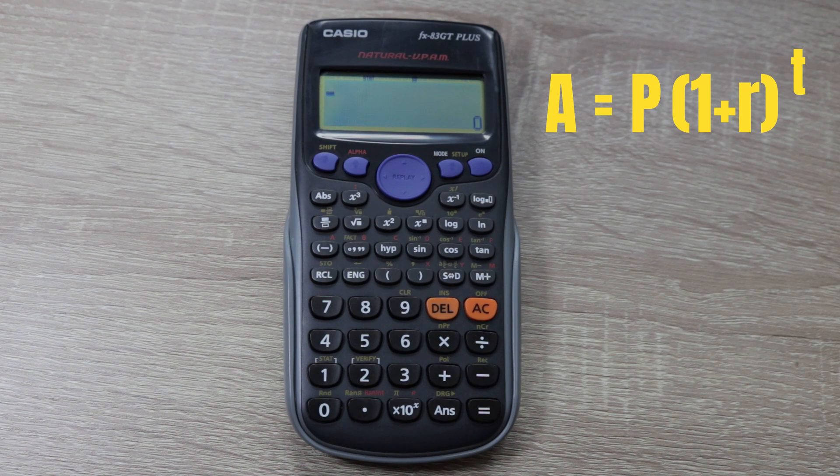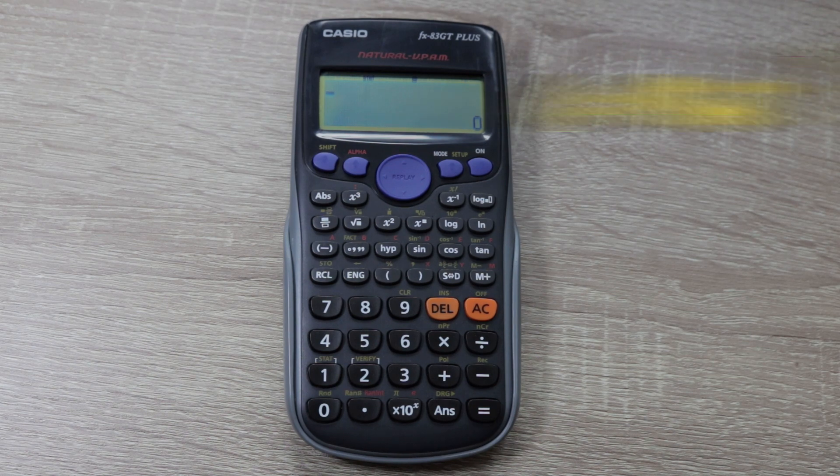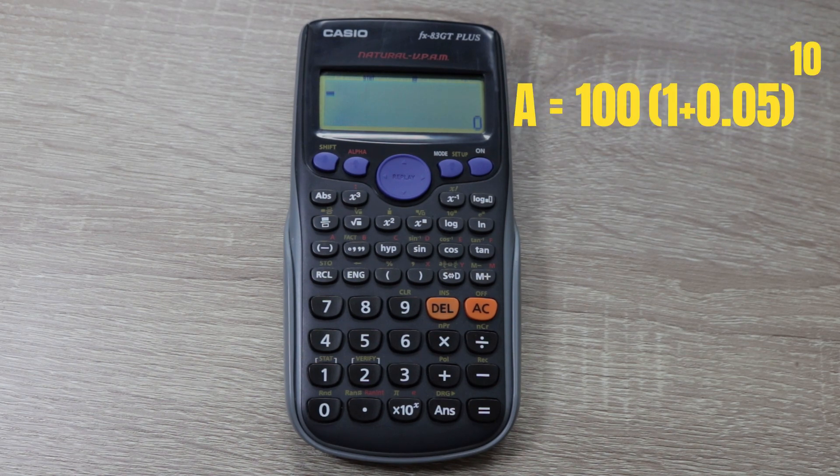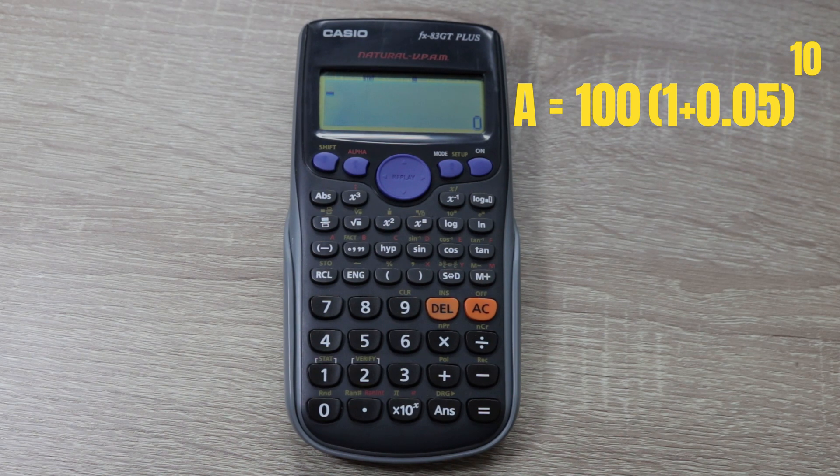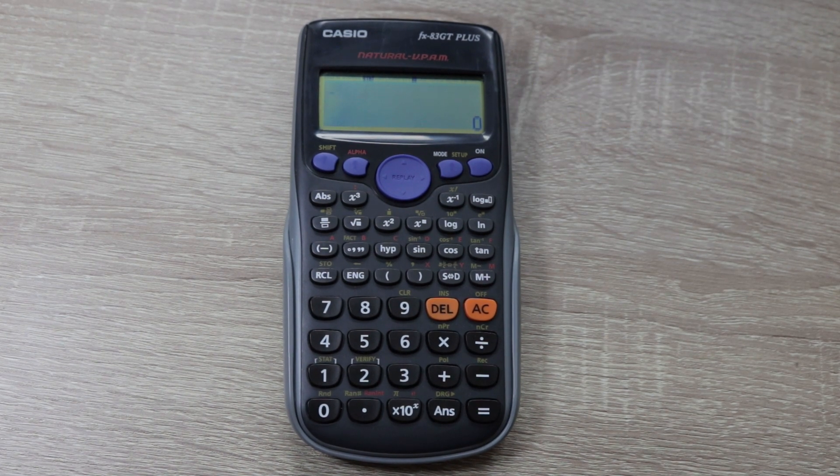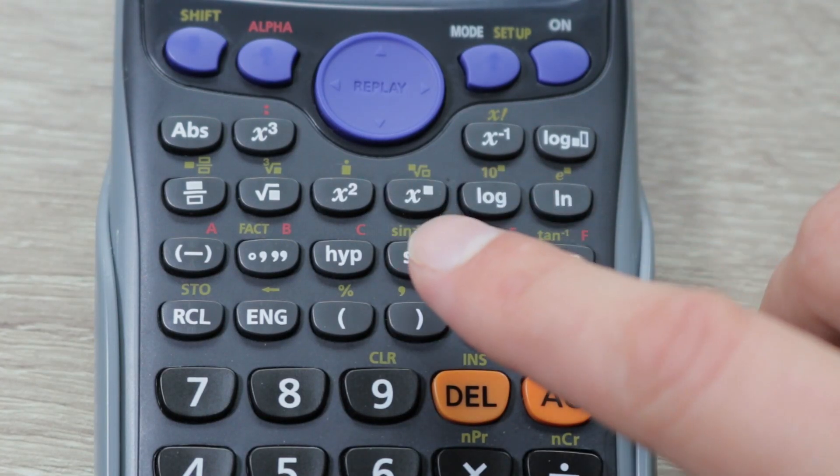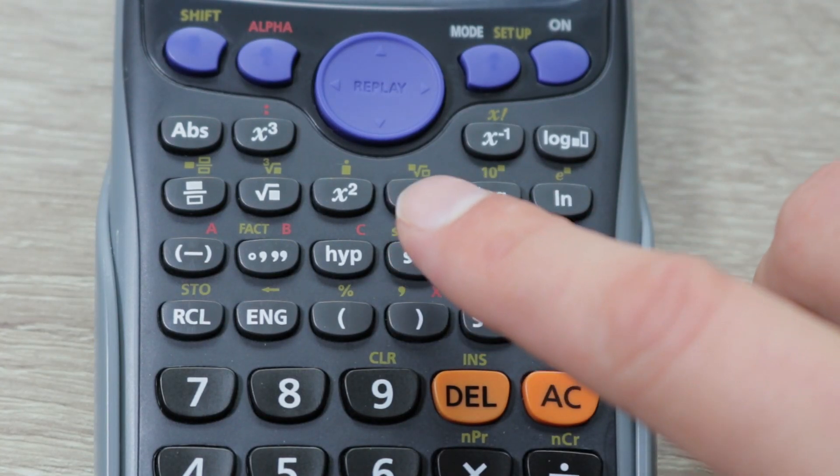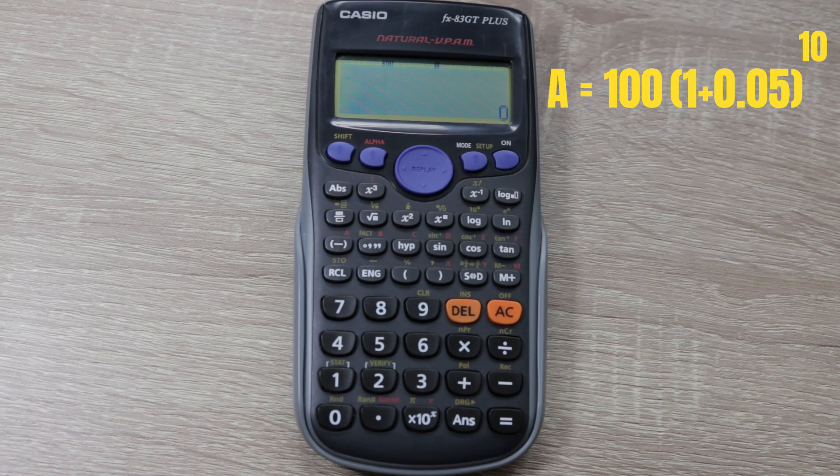To break that down we'll have 100, then in brackets 1 plus 0.05, and then to the power of 10. Now the to-the-power button on this calculator is right here - X with what looks like a little box next to it.